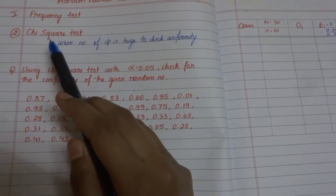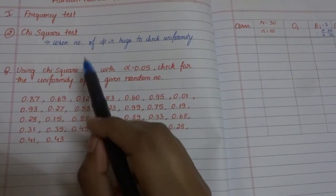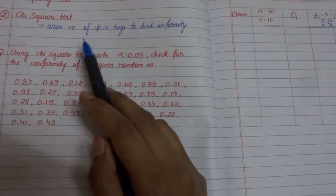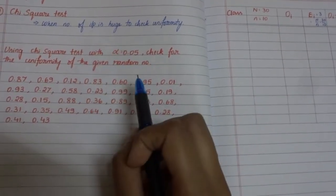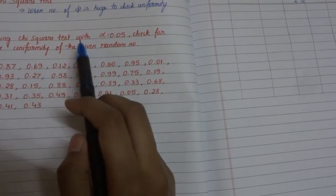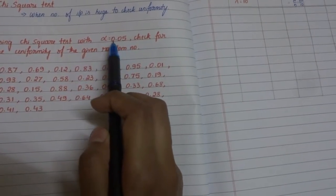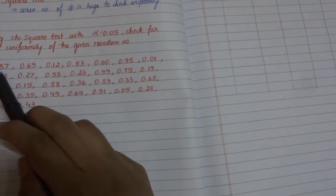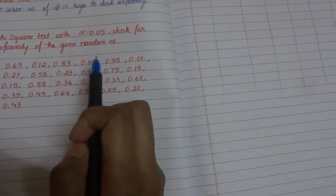In frequency test, the second test is chi-square test. It is used when the number of input is huge. So this is the question: using chi-square test with alpha equal to 0.05, check the uniformity of the given random numbers.